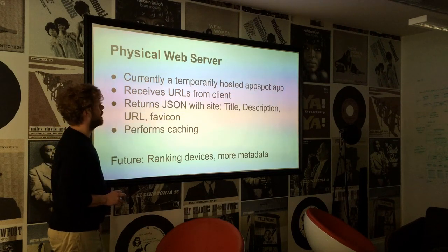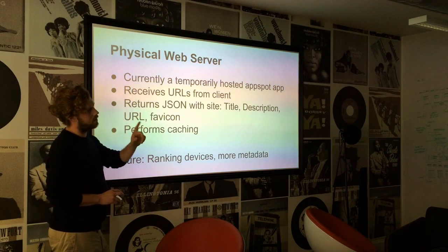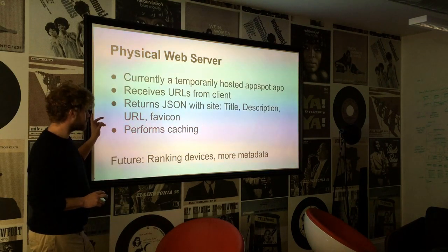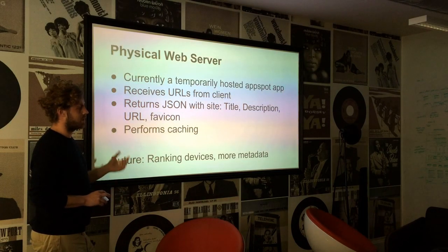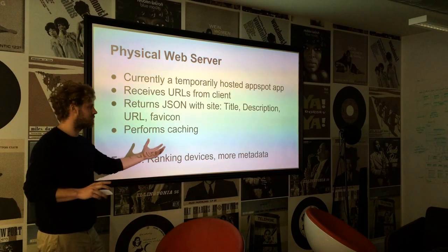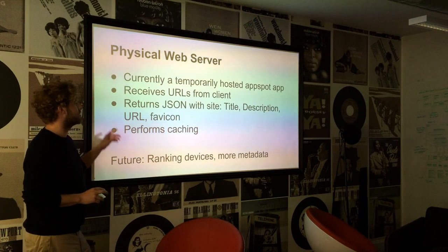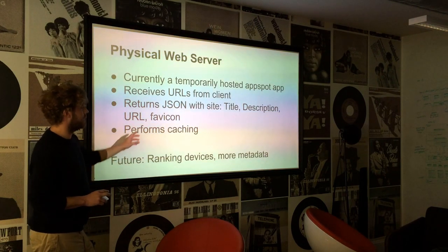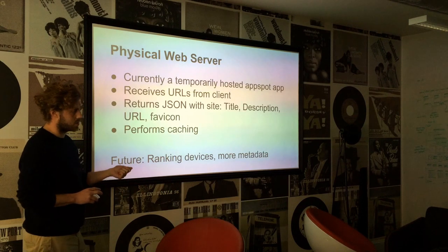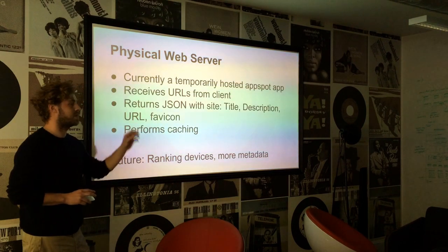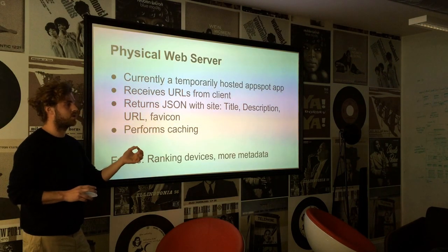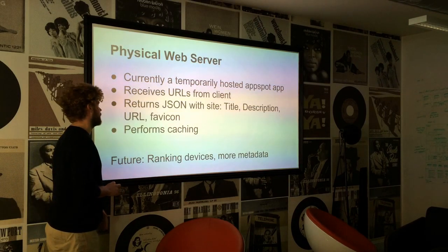Then there's the physical web server. Currently the one everyone seems to be using is hosted on AppSpot. There are probably going to be more physical ones coming up soon, and anyone can spin up their own. What the server does is it receives a bunch of URLs from the client — the client scans them and sends them to the server. The server checks the site, gets the title, meta title, meta description, the actual URL if it was a shortened one, and the favicon. That's how it presents things in the app: you see the title, description, and the little icon.